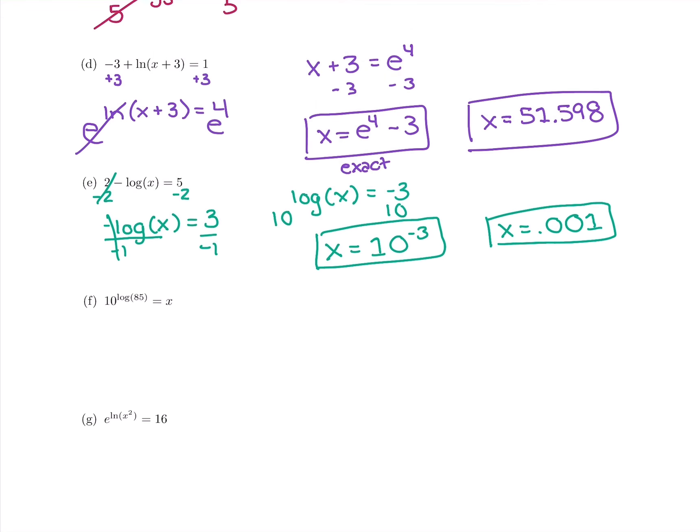The next one is a lot faster. We have 10 to the log of 85. Well, 10 to log base 10, those just cancel already on their own. So we get 85 equals x.